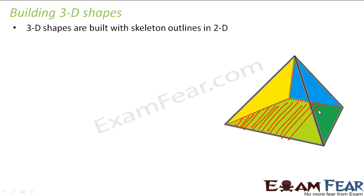Now, how do we determine what would be the 2D skeleton outline of this pyramid? In order to determine that, we have to first identify the faces of this pyramid. So in order to make this three dimensional pyramid, you need a quadrilateral base.